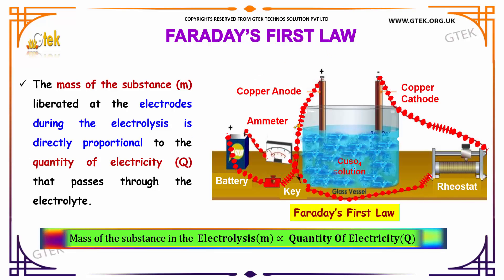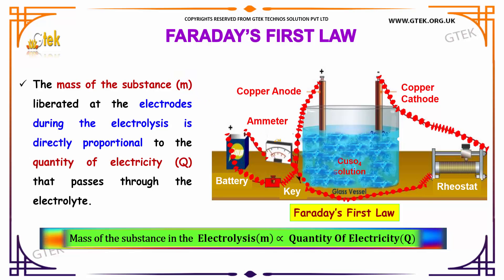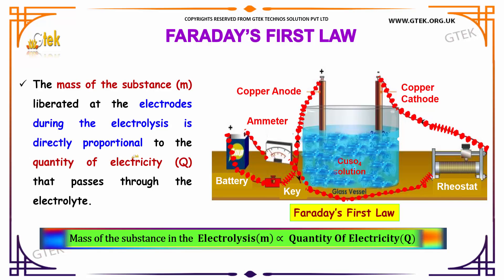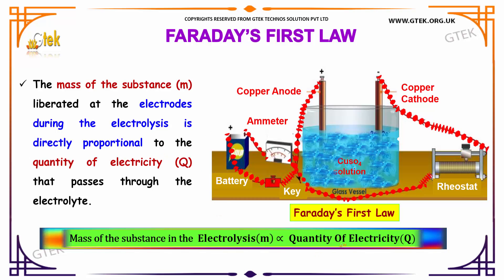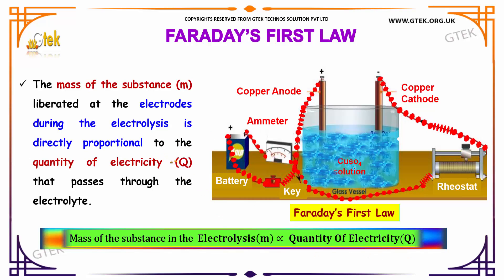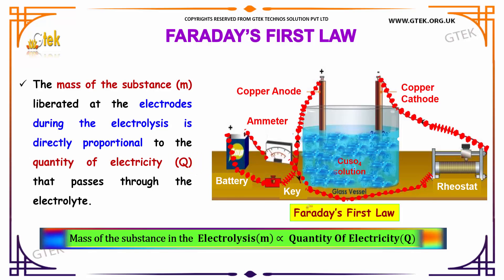According to Faraday's first law, the mass of the substance, indicated as m, liberated at the electrodes during the electrolysis is directly proportional to the quantity of the electricity indicated as Q that passes through the electrolyte.